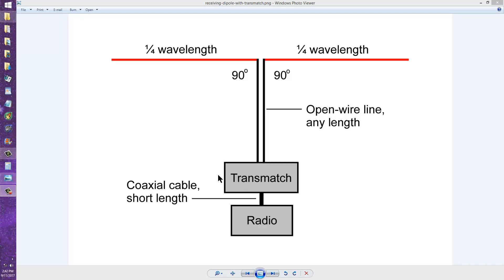And this can be a low-power transmatch, such as the type you might purchase for QRP transmitting. It doesn't have to be a balanced output. Ideally, it should be a true balanced transmatch. But, of course, if you do that, you can transmit just as well as you can receive on the antenna.